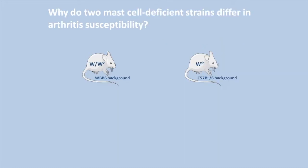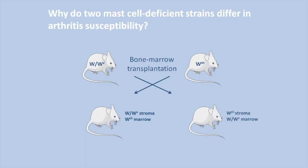We examined discordant experimental arthritis in two strains of mast cell deficient mice bearing mutations that affect kit. WWV mice in the WBV6 background are relatively resistant to arthritis mediated by transfer of KB-ByN serum. By contrast, SASH mice in the B6 background are susceptible. We used crisscross bone marrow transplantation to define the contribution of marrow and stroma to arthritis susceptibility.